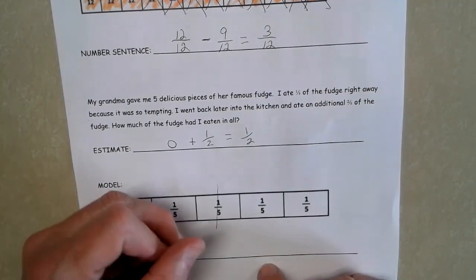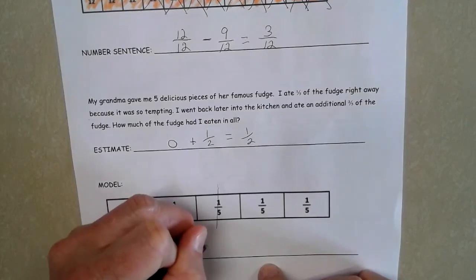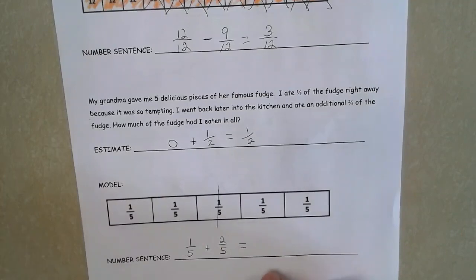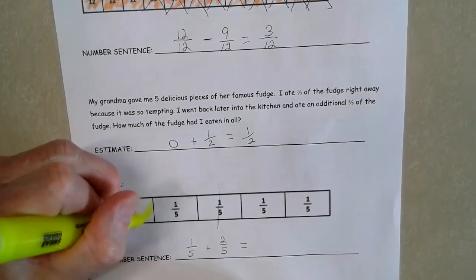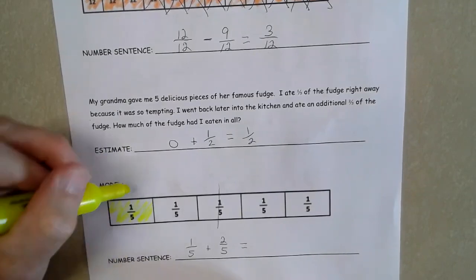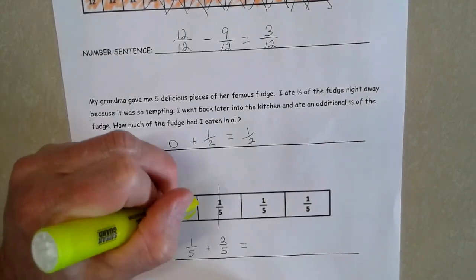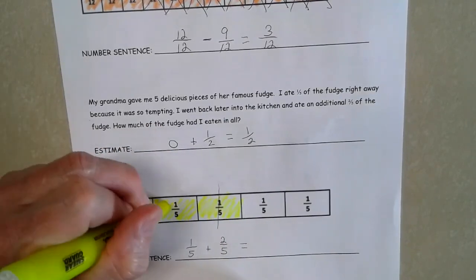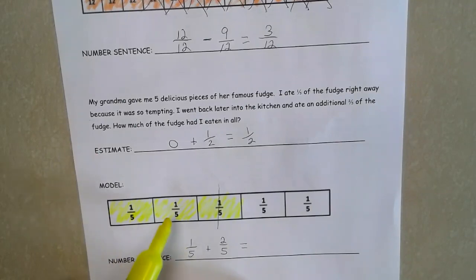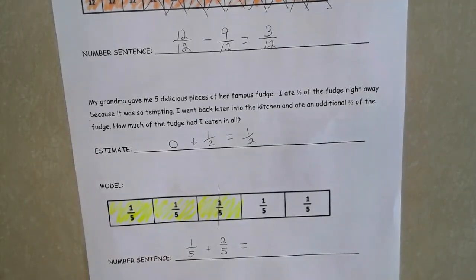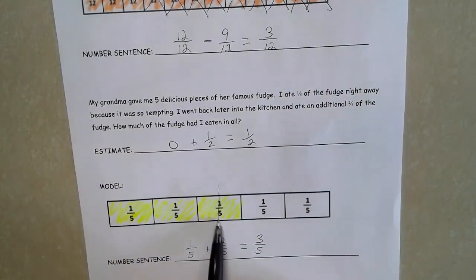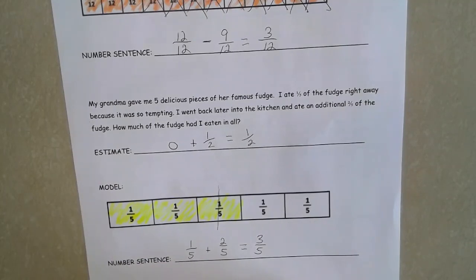So we'll set it up as a number sentence. We have one-fifth plus an additional two-fifths would give us how much fudge. Well, if I'm adding these, I have one-fifth, and then I ate one, two-more-fifths for a grand total of one, two, three-fifths. So I would have eaten three-fifths of the fudge. And as you can see, three-fifths is pretty close to a half. So we're right in the right ballpark for our estimate. So we ate three-fifths of the fudge.